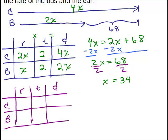So we've got a car and a bus. Now that we know what x is, x is 34, the bus's rate, I just put in 34. And we know that the car goes twice as fast so that must be 68, which of course happens to be the same thing as 2x. And we already knew their time.